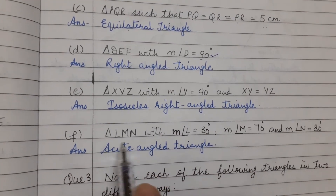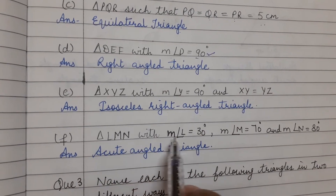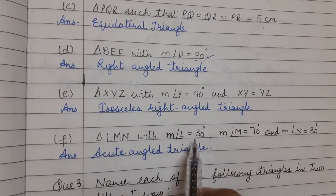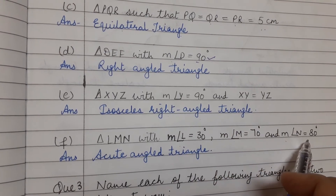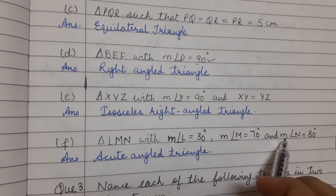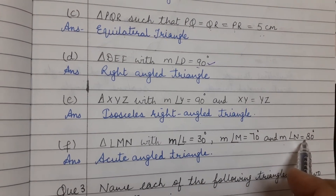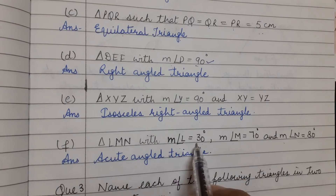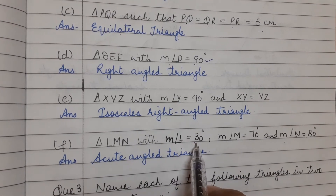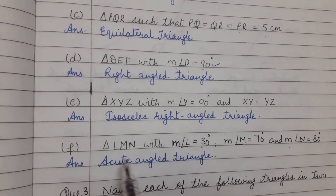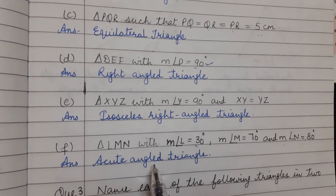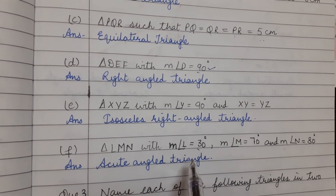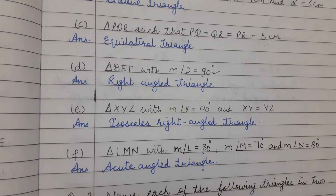Triangle LMN with angle L = 30, angle M = 70, and angle N = 80. All three angles are acute, so this type of triangle is an acute angled triangle.